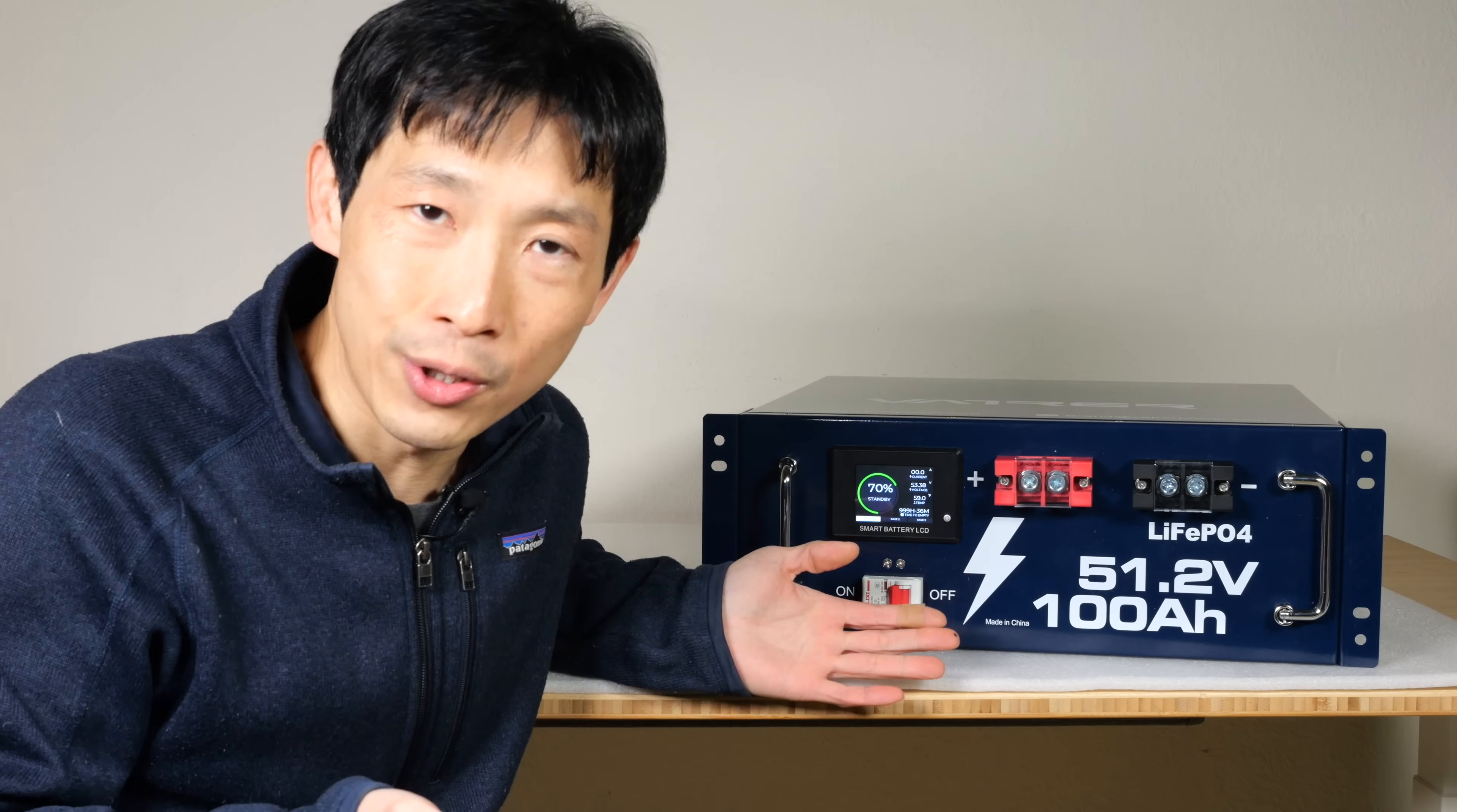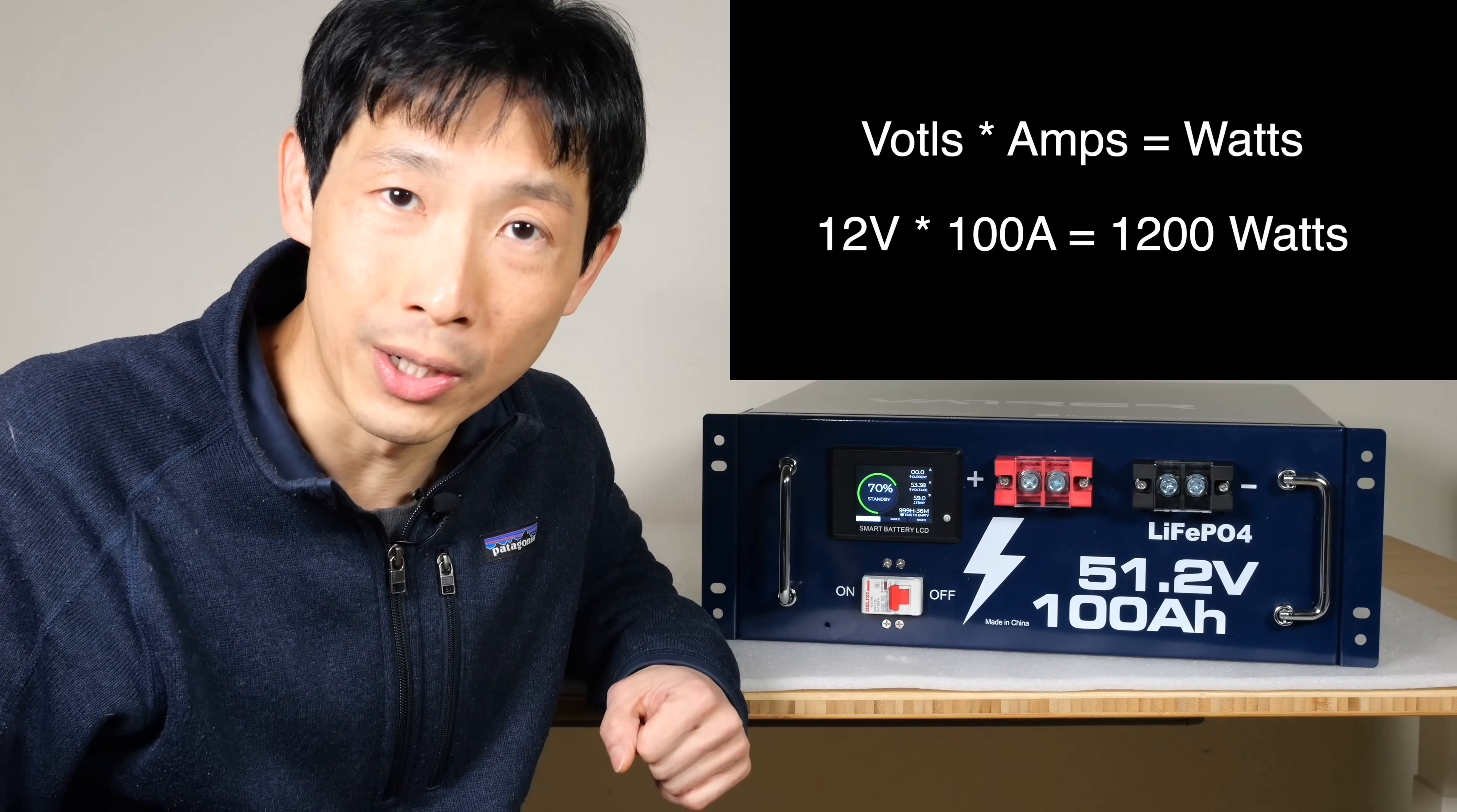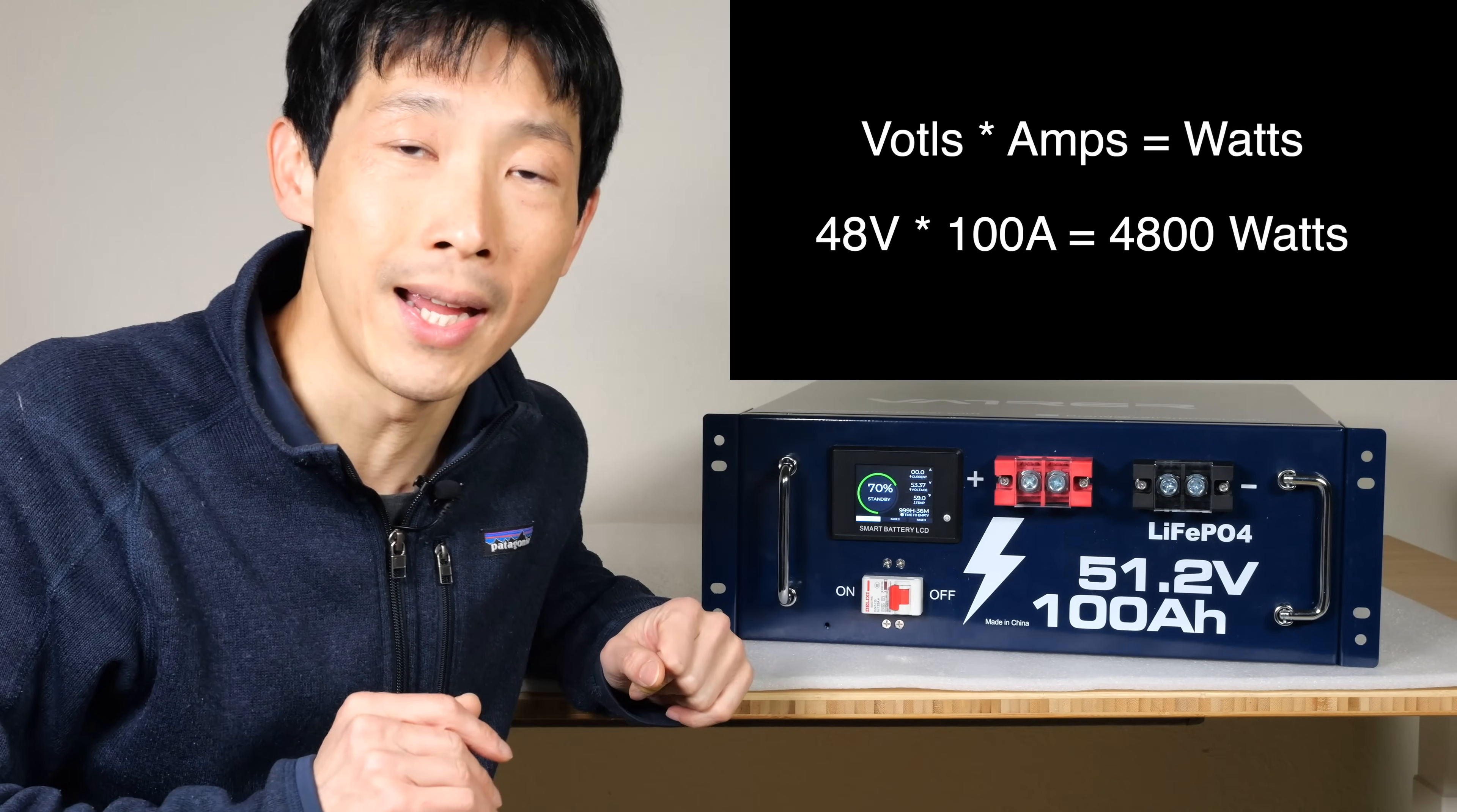Let's say you want to pass 100A. Voltage times current is equal to power, so 12V times 100A is 1,200W. However, if you bump this up to 48V, 48V times 100 is 4,800W.